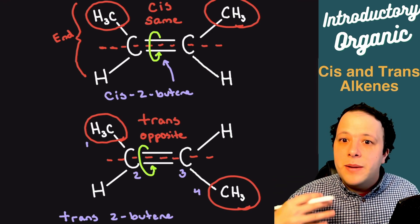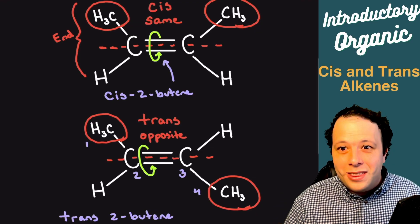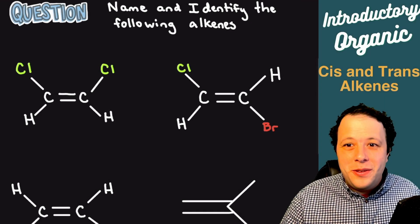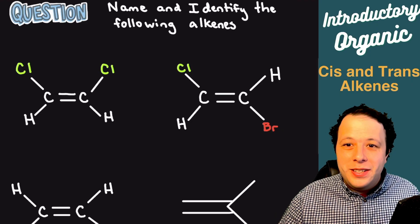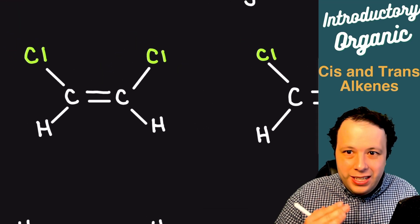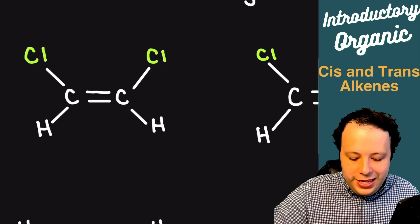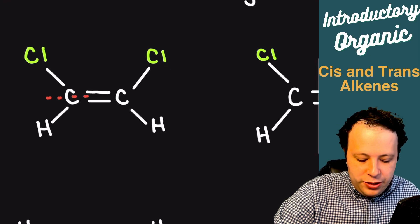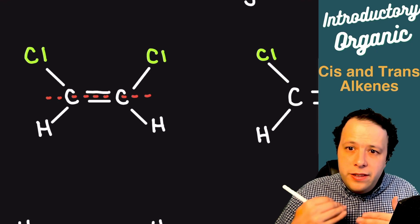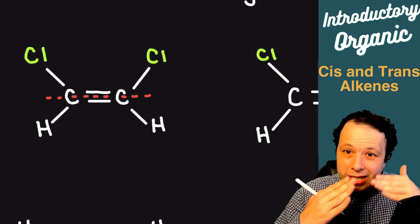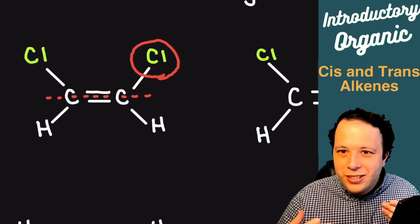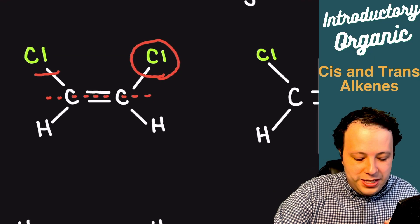Let's take a look at a bunch of examples, practicing identifying cis or trans and going through our naming. For the following problems we're going to be naming and identifying the different alkenes. I'm going to draw my little railroad tracks just like I did in the introduction. What we're looking at is: are the different groups on the same side or on different sides? It doesn't have to be only methyl groups — it can be anything, including halogens.